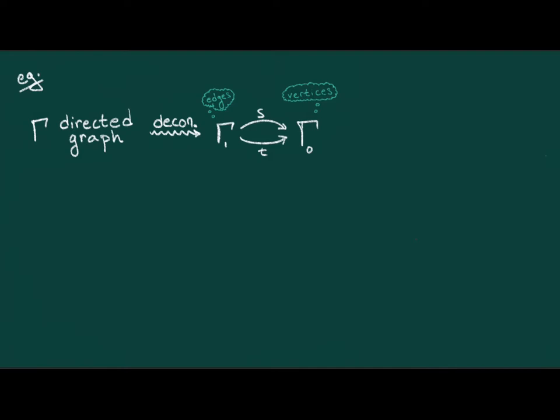The next thing we should do is somehow linearize the above data. Since I'm given a set of vertices and a set of edges, I should ask myself, how do I generate a linear object from a set? Well, this is pretty easy to answer if you already know the answer. You just take formal linear combinations of elements of that set. In other words, you take the span of the set of edges and the span of the set of vertices.